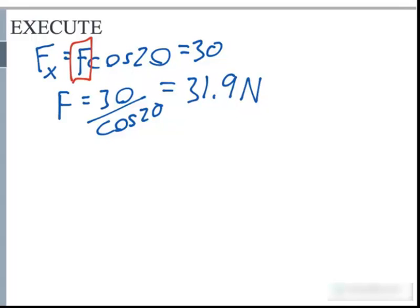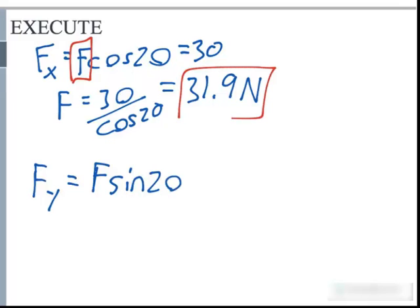Similarly we can do this same thing for Fy. Fy will equal F sine 20 degrees. Now plugging in the value we found here in for F, we will find that this equals 10.9 newtons.